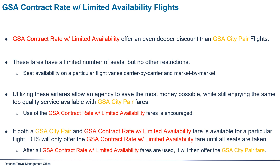The second type of fare is GSA contract rate with limited availability, which offers an even deeper discount than GSA city pair flights. These fares have a limited number of seats but no other restrictions. Seat availability varies carrier by carrier and market by market. Utilizing these airfares allows an agency to save the most money possible while still enjoying the same top quality service available with GSA city pair fares. Use of these fares is encouraged. If both fare types are available for a particular flight, DTS will only offer the GSA contract rate with limited availability fare until all seats are taken.